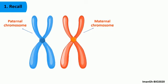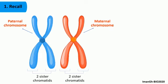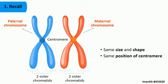Keep in mind that each chromosome is made up of two sister chromatids, and that homologous chromosomes are of the same size and shape. They have the same position of centromere, as well as same position of genes.